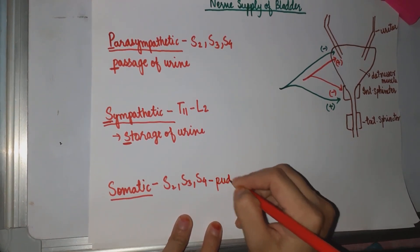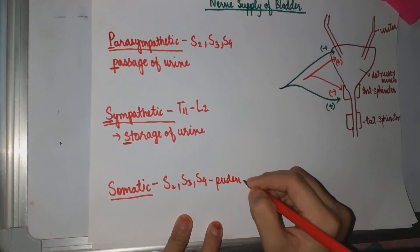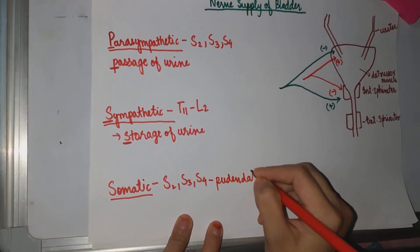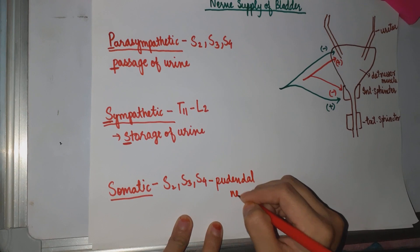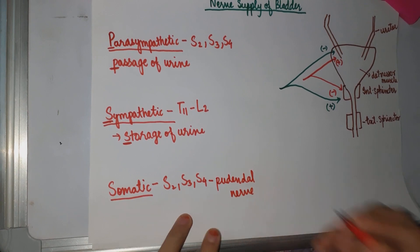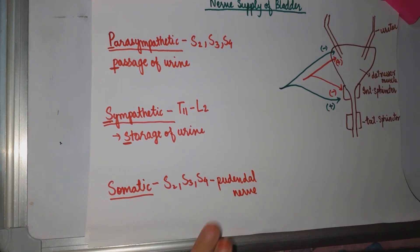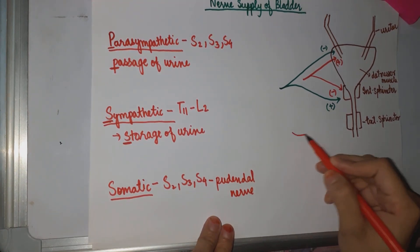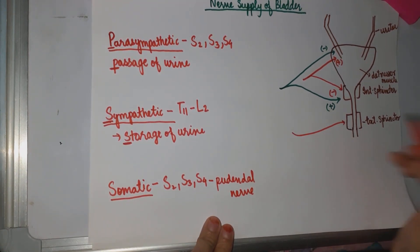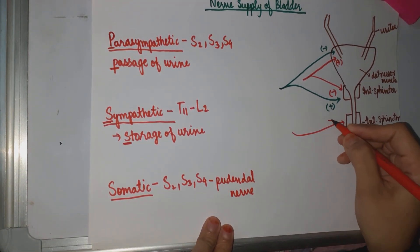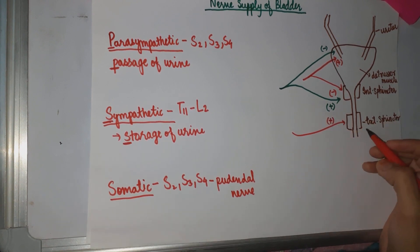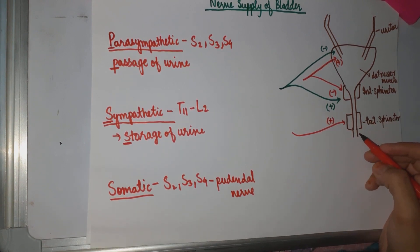The somatic nerve supply comes from the pudendal nerve. This pudendal nerve stimulates the external sphincter. It is under voluntary control and does not allow the passage of urine.